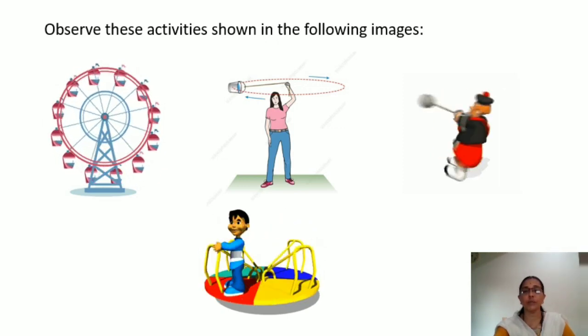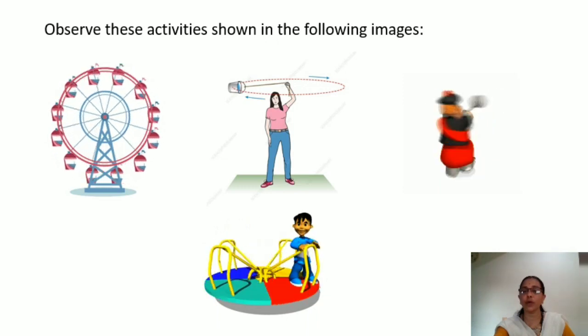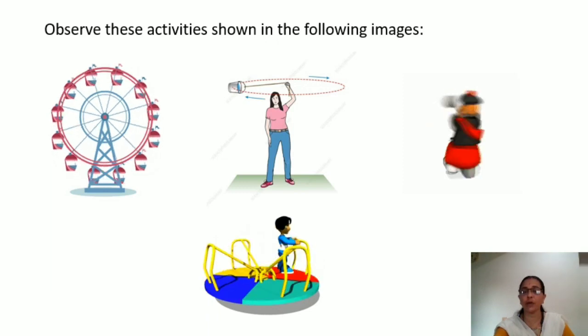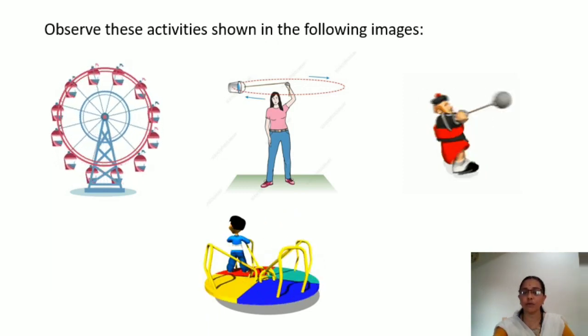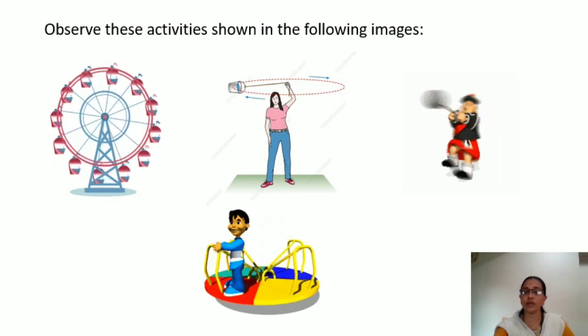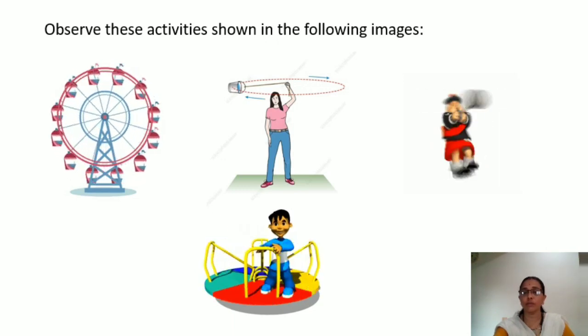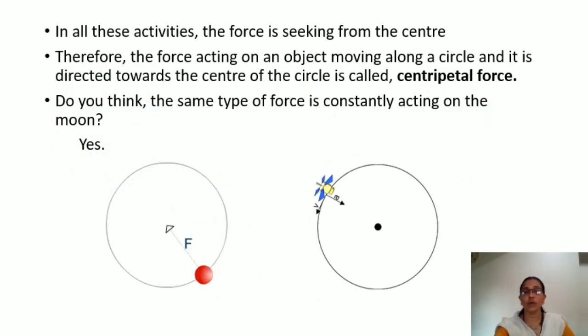These are the examples of centripetal force. There are a few more examples around in your surrounding. Please try to write down some examples for centripetal force or objects moving in a circular motion. In all these activities, force is seeking from the center. Therefore, the force acting on an object moving along a circle and directed towards the center of the circle is called centripetal force.